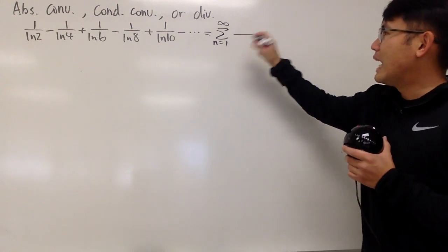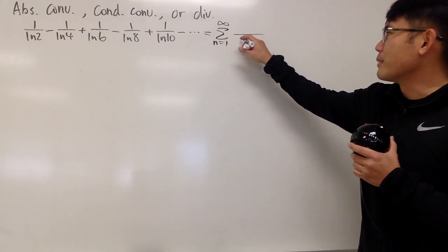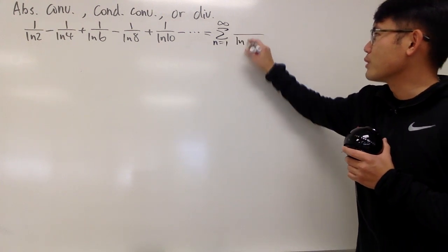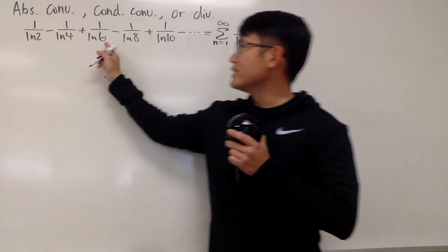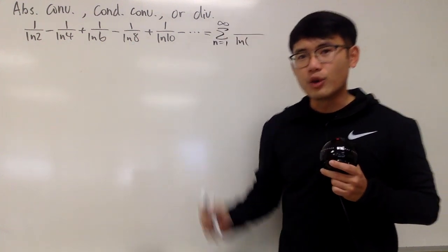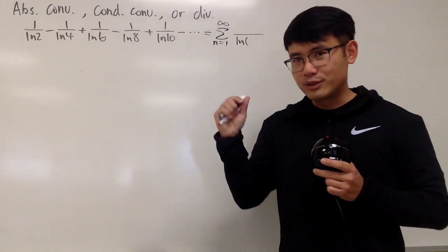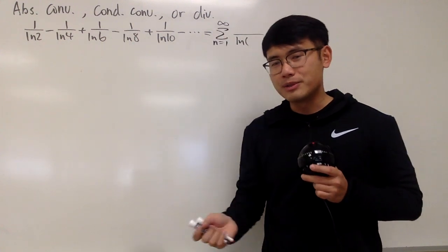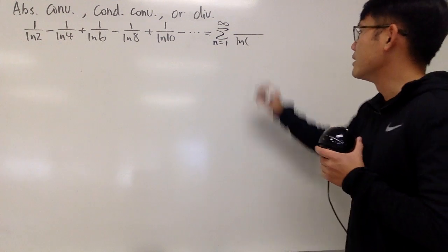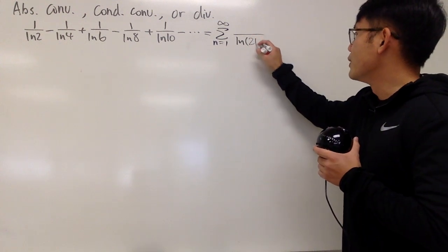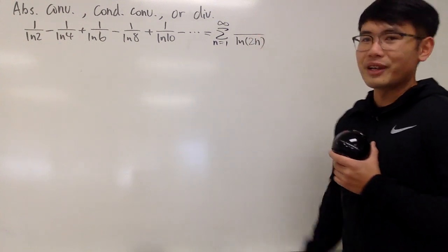We have natural log on the bottom, and you can see 2, 4, 6, 8, 10, and so on — that's 2 times 1, 2 times 2, 2 times 3, 2 times 4, and so on. That is of course 2 times n right here.